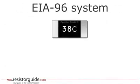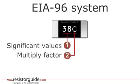Now we take a look at another popular coding method: the EIA96 system. This system is based on the E96 series of preferred values, so these resistors should have an accuracy of 1%. The first two digits represent a code that is used with a table to find the resistance value with three digits.